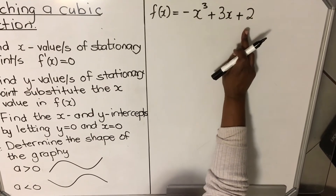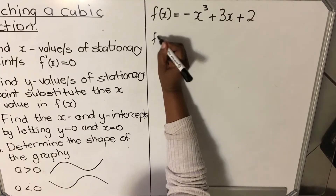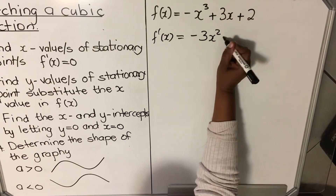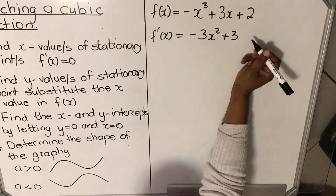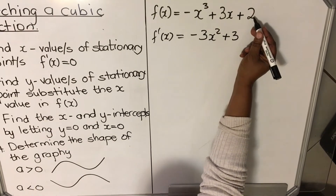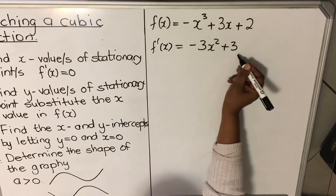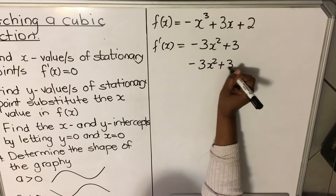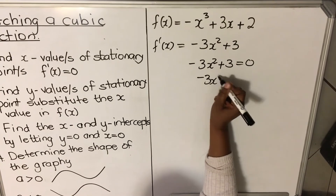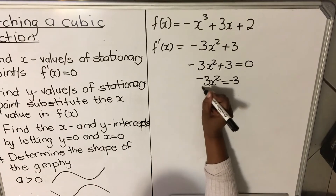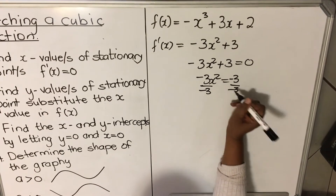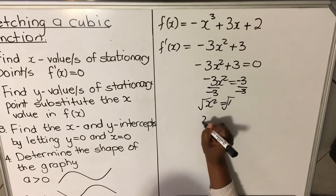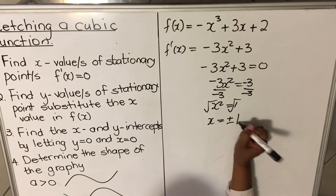Our function is f(x) = -x³ + 3x + 2. To find the stationary point, we find the derivative: f'(x) = -3x² + 3. The derivative of a constant is zero. We equate it to zero: -3x² + 3 = 0, so -3x² = -3. Dividing both sides by -3 gives x² = 1. Taking the square root of both sides, x = ±1, giving two values: x = 1 and x = -1.